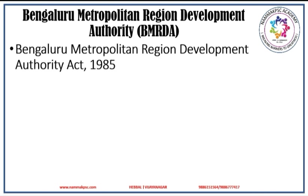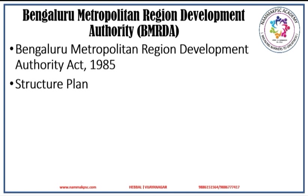Let us discuss about the Bengaluru Metropolitan Region Development Authority. BMRDA is established under the Bengaluru Metropolitan Region Development Authority Act 1985 for the purpose of proper and orderly development of the area within the Bengaluru Metropolitan Region. This authority prepared a structure plan in 1998 based on the availability and future prospects in respect of natural resources and infrastructure, and the trend of urbanization in the region was approved by the government during 2005.